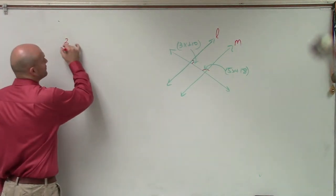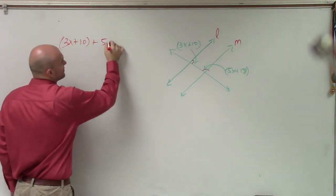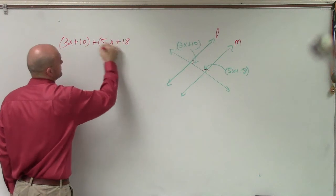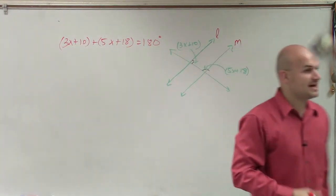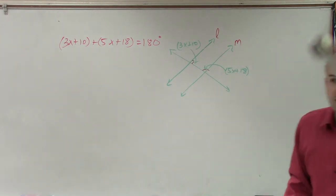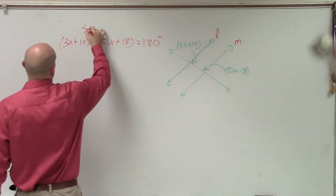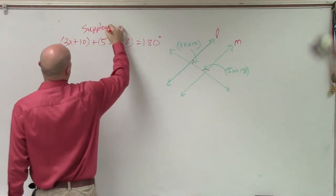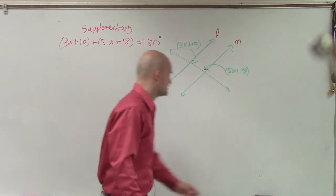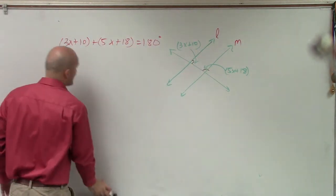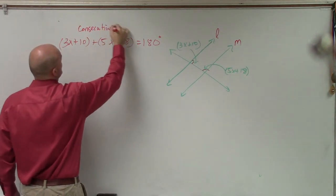So what I'll do is I'll write 3x plus 10 plus 5x plus 18 equals 180. See how this is a little bit different than the one that had alternate exterior? Alternate exterior, we just set them equal to each other, and then we solved. Here, we have to add them. And we have to add them because the angles are, oh, I'm sorry, I don't want to use supplementary. They are supplementary. But I want to write the definition, which is consecutive interior.